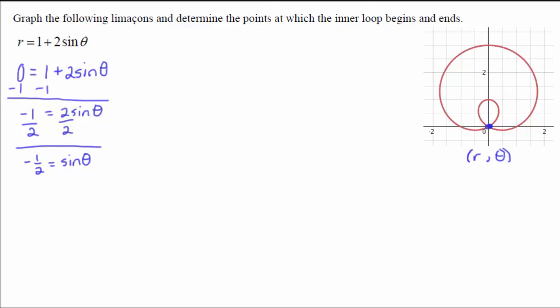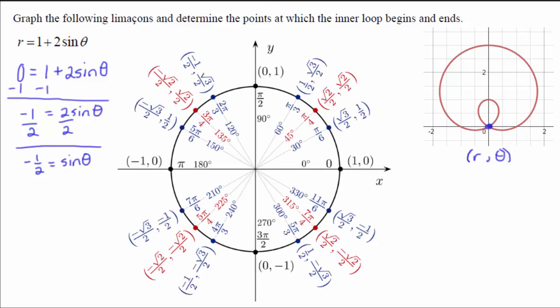And one way to do that is to pull up your handy dandy unit circle and look for where your y values are negative 1 half. So my y values will be negative 1 half down here at 7 pi over 6 and at 11 pi over 6.